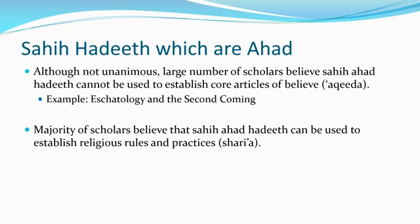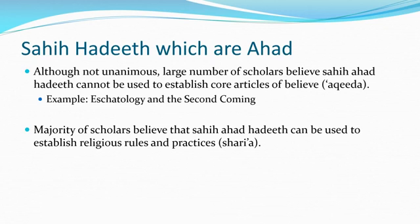To summarize, there are three opinions. First, the majority opinion: sahih ahad hadiths convey dhan — probability but not yaqeen — so they cannot establish aqeedah. Second, the opposite opinion held by scholars like Ibn Hazm: a sahih ahad hadith can convey yaqeen. Third, the middle-ground opinion: under specific conditions — appearing in Sahih al-Bukhari or Muslim, being mashhur, or if less than mashhur but consisting of well-known scholars — a sahih ahad hadith can convey yaqeen.